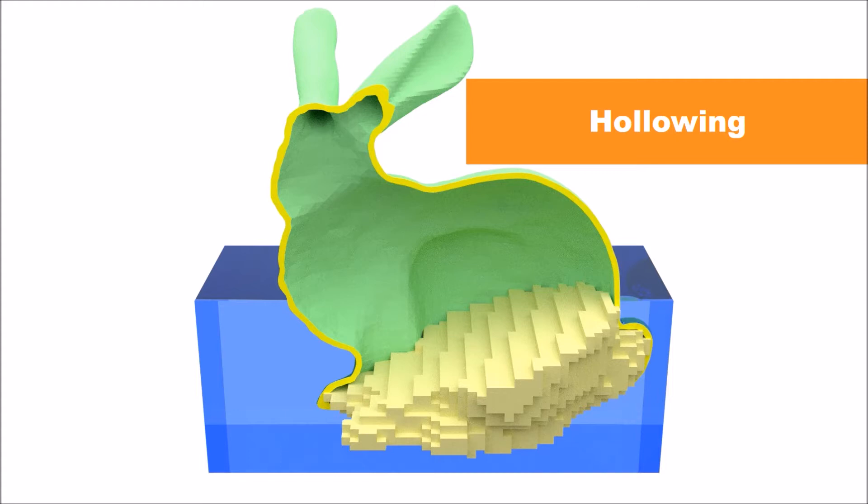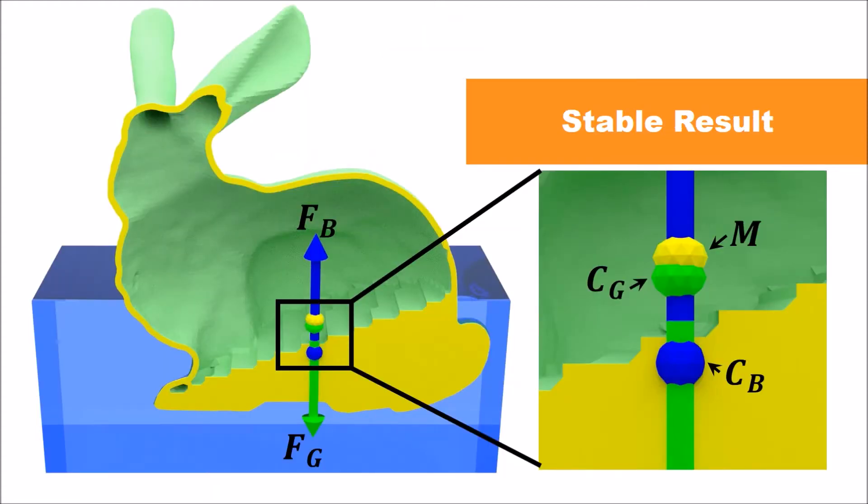A minimal wall thickness is guaranteed to make the bunny watertight and able to be fabricated. After optimization, the gravitational force Fg and the buoyancy force Fb cancel out each other. The center of mass Cg is now below the stability threshold M. Thus, the result bunny can steadily float in the desired way.